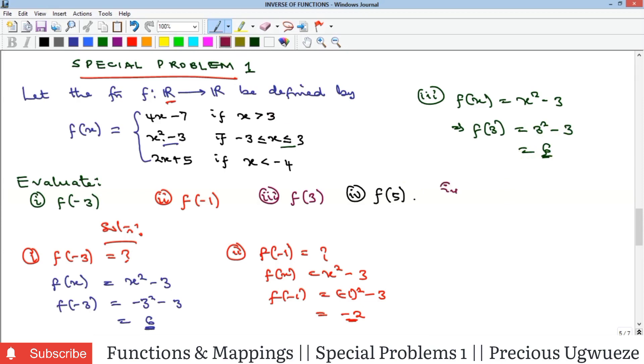Finally, for the last example, we are asked to find f of 5. Amongst these intervals, this is where f of 5 is contained because x here is greater than 3, and our 5 is greater than 3.